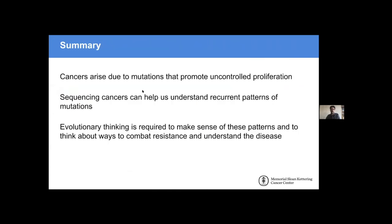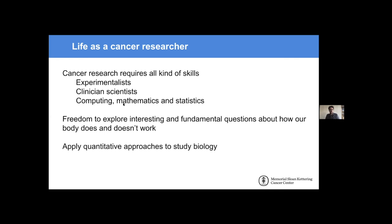That brings the end of my talk. I just wanted to highlight some of the key messages. First of all, cancers arise due to mutations that promote and control proliferation — lots of the work has been trying to understand what these mutations are and in which genes they occur, and sequencing can really help us understand these patterns. Evolutionary thinking is also required to make sense of these patterns and to think about new ways to combat resistance and understand the disease. I thought I'd spend the last few minutes talking about what it's like being a cancer researcher and why I chose this career.